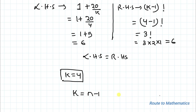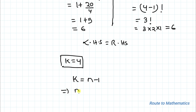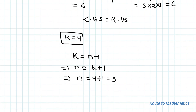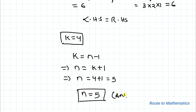Since we took k = n − 1, this implies n = k + 1 = 4 + 1 = 5. Hence the value of n is 5. I hope you have understood the solution. Thanks for watching. Please subscribe to my channel and click the bell icon for more such interesting videos. Thank you.